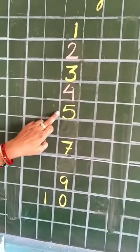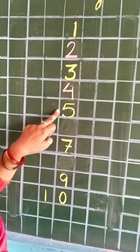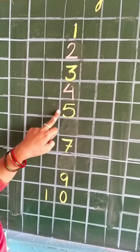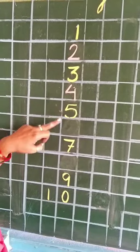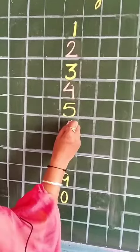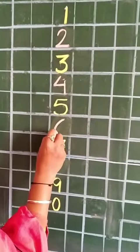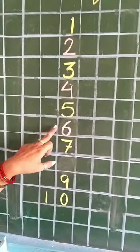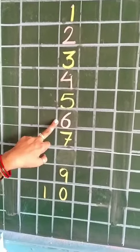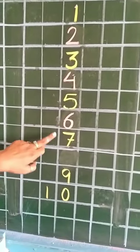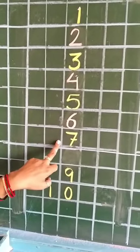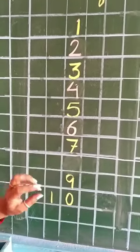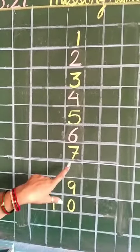What comes after 4? 5. 5 box me likhha hua hai. So aapko 5 nahi likhna hai. 5 ke baad kya aega? 6. Okay, so we will write 6 in this empty box. What comes after 6? 7. 7 is written, so you will not repeat it.